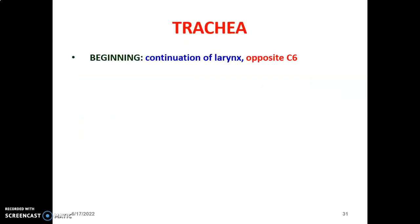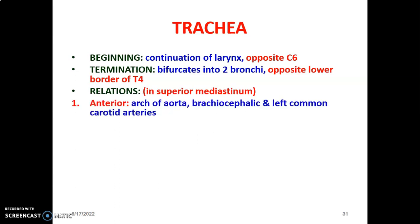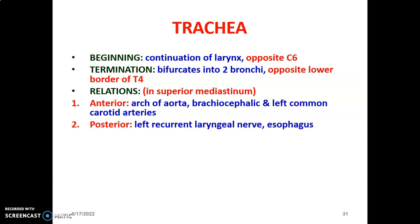The trachea is also located in the mediastinum. It originates as a continuation of the larynx opposite the C6 vertebra and terminates by bifurcating into two bronchi, again at the sternal angle of Louis — another event at the T4-T5 plane. The relations of the trachea in the superior mediastinum: anteriorly you find the arc of the aorta, the brachiocephalic trunk, and the left common carotid artery. Posteriorly is the esophagus, and in between the trachea and esophagus in the tracheoesophageal groove is the left recurrent laryngeal nerve.